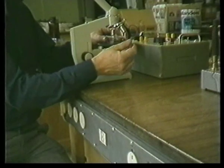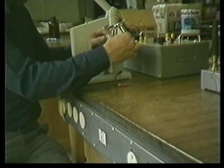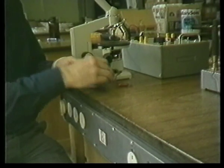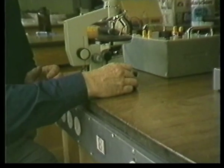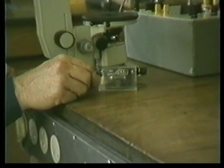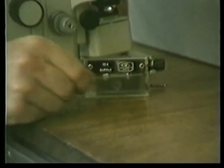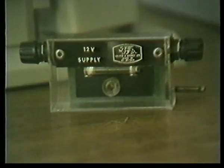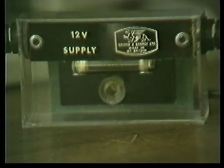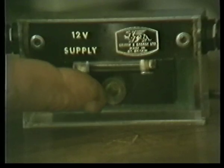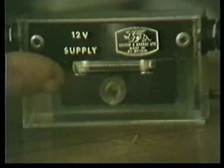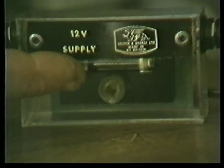To see the smoke particles, this apparatus was used. Smoke from a burning straw is put into a small glass tube called a smoke cell. Light is focused onto the smoke cell by a glass rod.